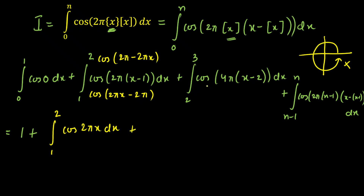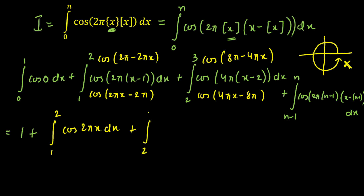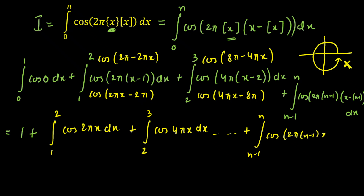Similarly, the next term cos(4πx − 8π) simplifies using the even function property: cos(8π − 4πx). Again we land in the 4th quadrant, so it stays positive, giving cos(4πx). That integral runs from 2 to 3 of cos(4πx) dx. Generalizing, the last term becomes the integral from n−1 to n of cos(2π(n−1)x) dx.